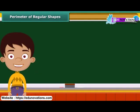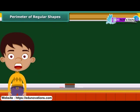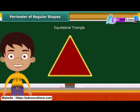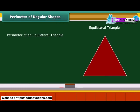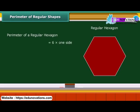Shapes that have all sides of equal length and all angles of equal measure are known as regular shapes. A square is a perfect example of a regular shape. Another regular shape is the equilateral triangle, whose three sides are equal. The perimeter of an equilateral triangle is 3 multiplied by its side — for example, a triangle of side 3 cm has a perimeter of 9 cm. The perimeter of a regular hexagon is 6 multiplied by its side — for example, a hexagon of side 5 cm has a perimeter of 30 cm.